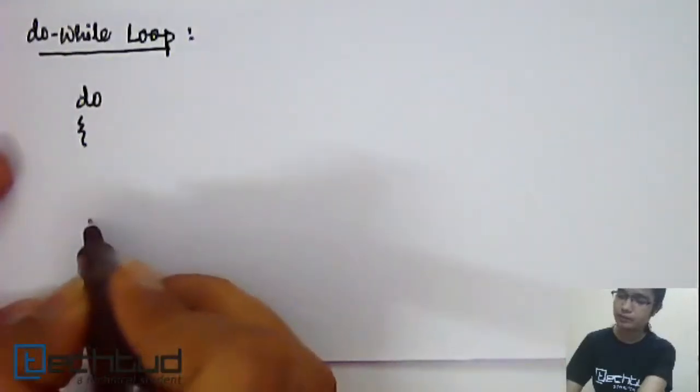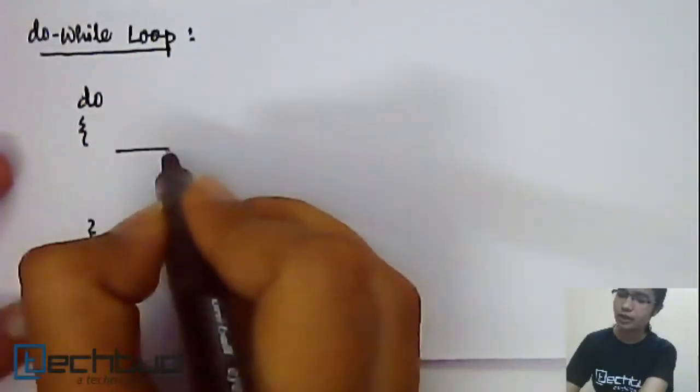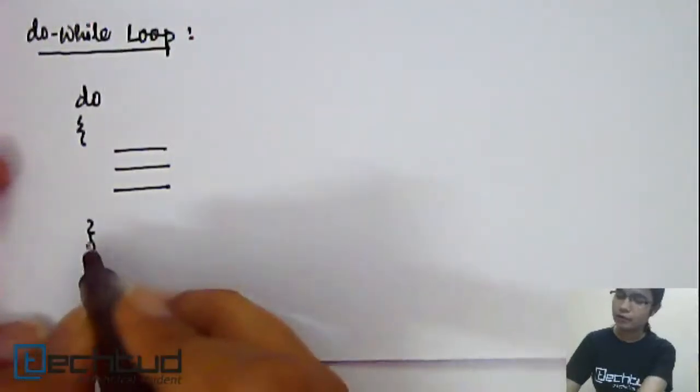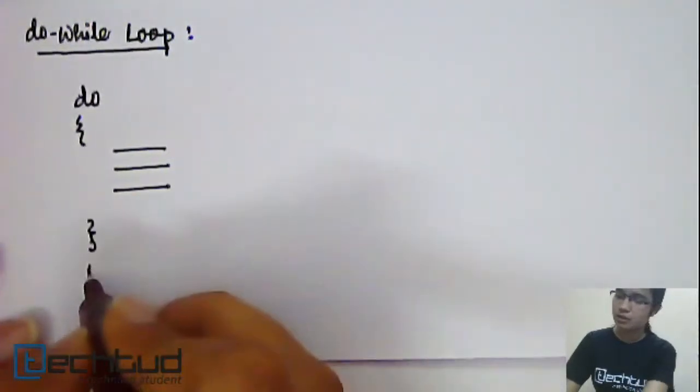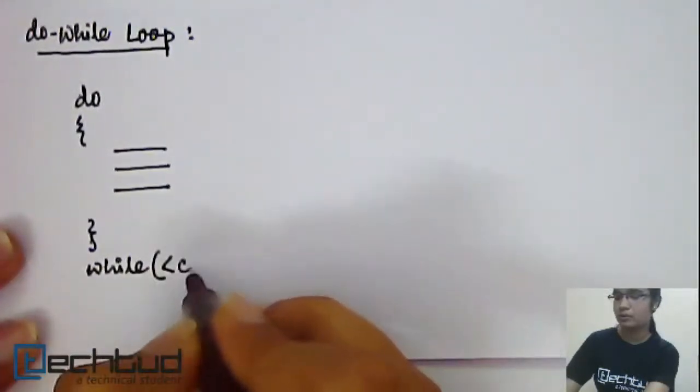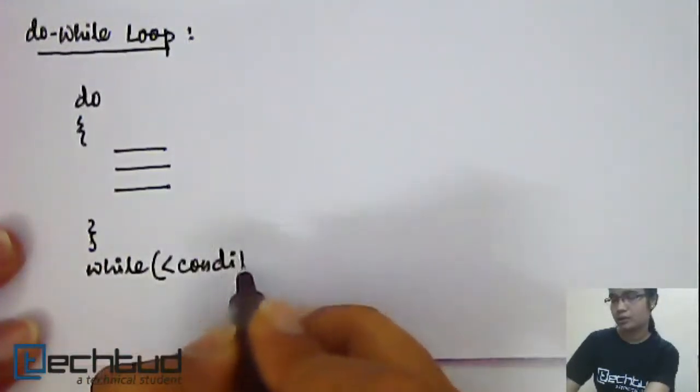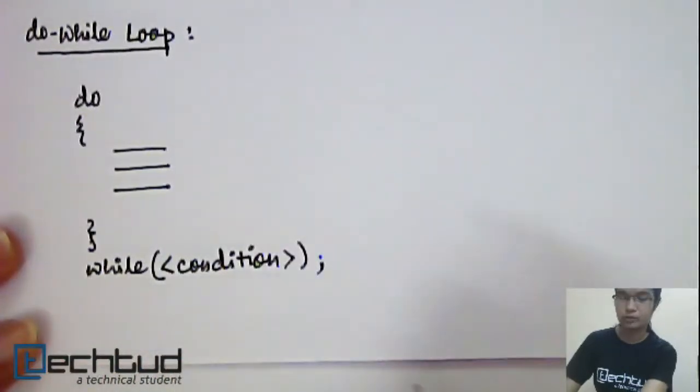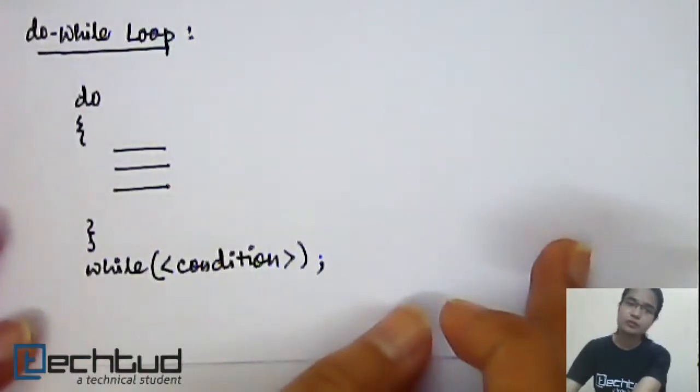Then in a pair of braces you need to write all the statements you need to be executed iteratively. After this pair of braces you write while, your condition, and then semicolon. This is the syntax of do-while loop.